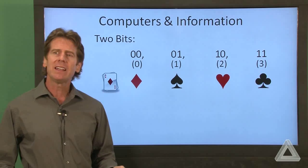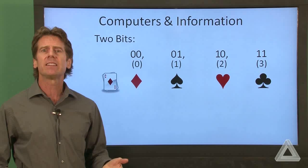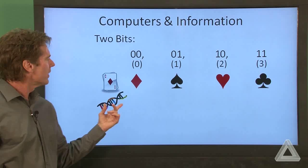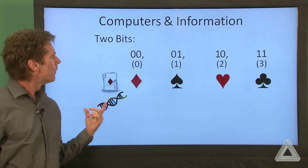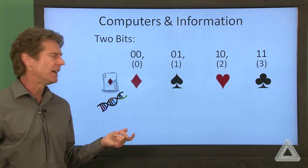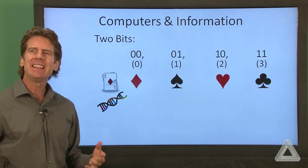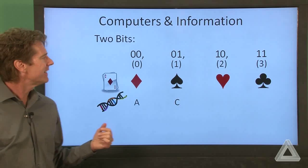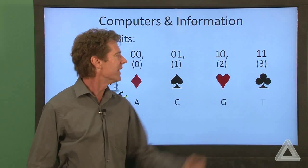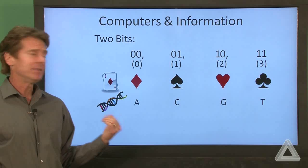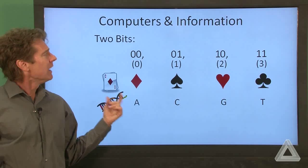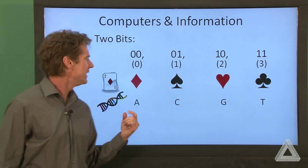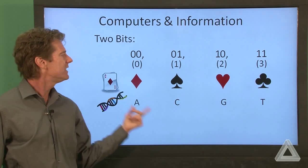We might be interested in doing studies of genetics. And genetics, we have that double helix that consists of four different nucleotides. There's A, C, G, and T. There's adenine, cytosine, guanine, and thymine. And if we want to study an entire gene that consists of many of these nucleotides, we just need two bits to represent each one.